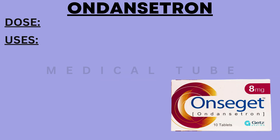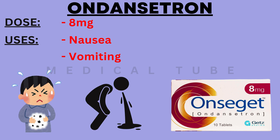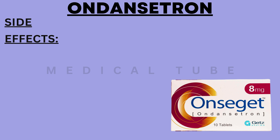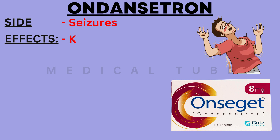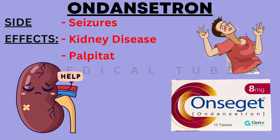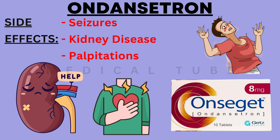The next drug is Ondansetron. The dose is 8 mg and it is used for nausea and vomiting. The side effects of Ondansetron are seizures (fits), kidney disease and palpitations (irregular heartbeat).